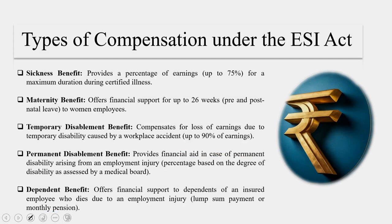When looking into types of compensation under the ESI Act, the first is the sickness benefit. This benefit typically offers financial support to insured people during periods of illness or injury, replacing a portion of their wages to help manage financial needs while recovering. To be eligible, an employee must have made the required contributions for a specific period defined by the Act. The sickness benefit is typically calculated as 70% of the employee's daily average wages, subject to a maximum daily amount.